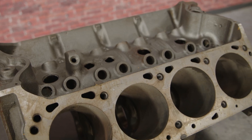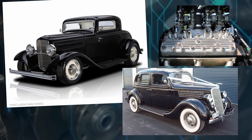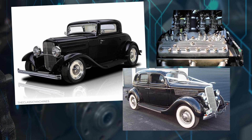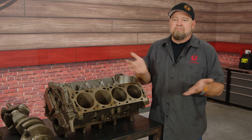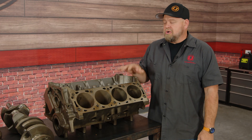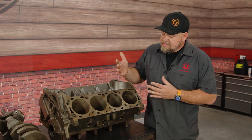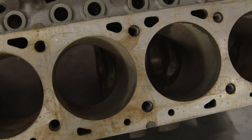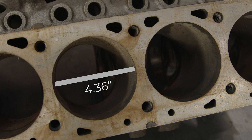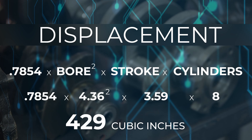Now here we have our big block 429 — obviously physically larger. Big blocks were originally designed for larger sedans and trucks because they wanted a bigger engine, more cubic inches, more physical engine size to move heavy vehicles. Hot rodders got hold of big blocks and started sticking them in small, lightweight cars — the manufacturers followed, and that's where the muscle cars came from. Most of the most desirable muscle cars had big block engines because in a lightweight car, they made them fast. This 429 big block has a 4.36-inch bore — much larger than our small block — and a 3.59-inch stroke. Combine that with an eight-cylinder engine and the math comes out to 428.79, which is basically a 429.